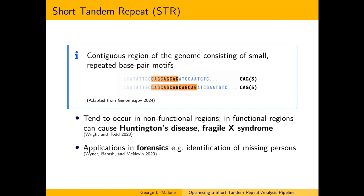A short tandem repeat, or STR, is a region of the genome made up of small motifs repeated end-to-end. STRs are considered harmless in non-functional regions of the genome, but are known to cause neurological and developmental disorders if present in functional regions. These diseases, and hence STRs, are linked to phenotypes such as white matter hyperintensities in brain MRI. This association could be leveraged for medical diagnostics.